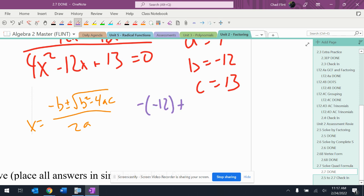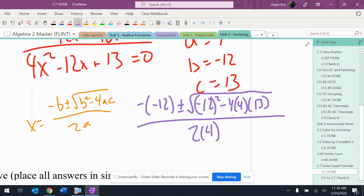negative 12 squared minus 4 times A is 4 times C is 13 over 2 times 4.